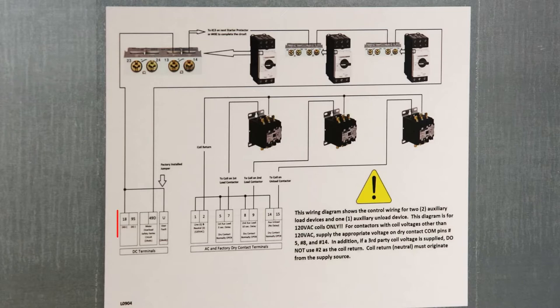Starting on the left, we'll have some low voltage circuits. Our 18 is our 24 volt DC circuit and the 95 is the DC common.